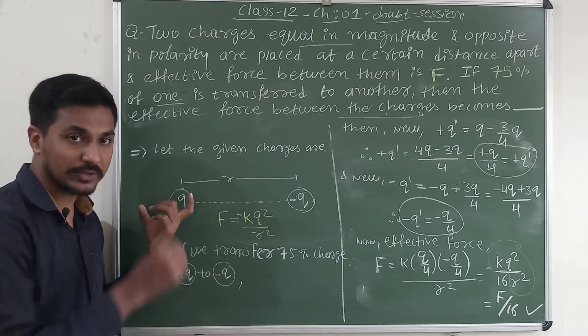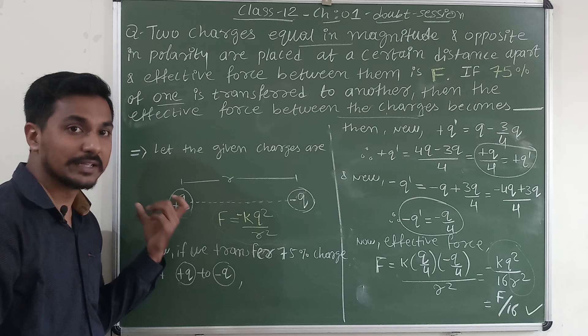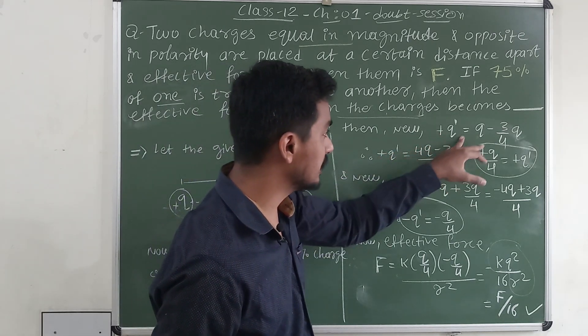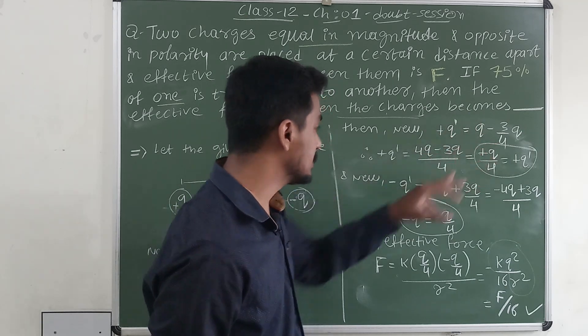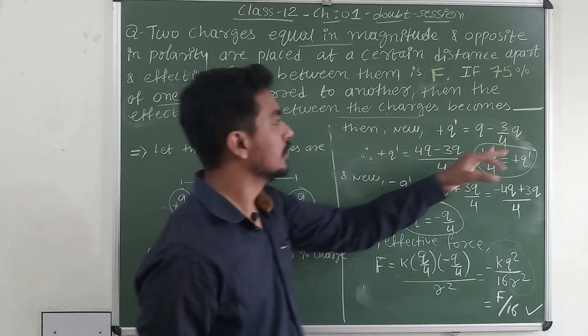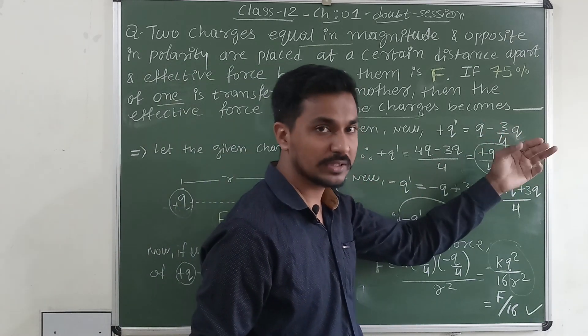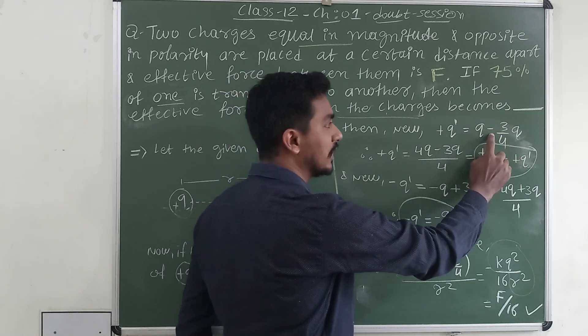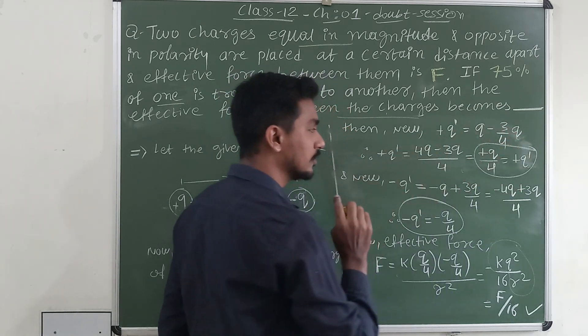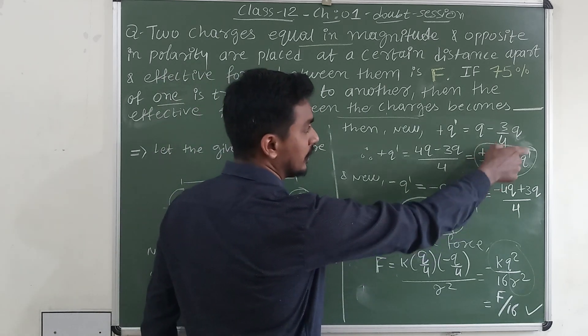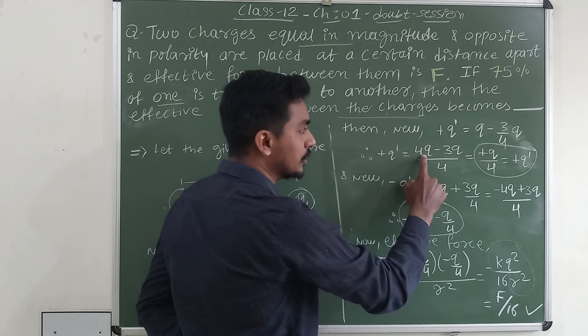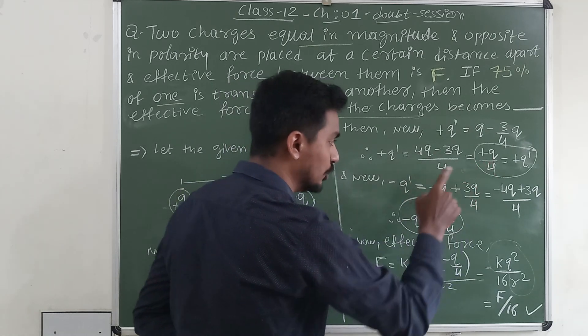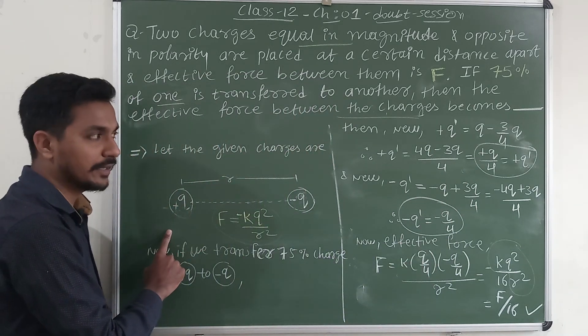From a positive charge if we transfer some amount of charge to another charge, then its amount will reduce. We will get a new charge, here new positive charge plus Q dash. Original is Q. From that we are transferring how much? 75 percent. 75 percent means 3 by 4 of the original charge. Q minus 3 by 4 of Q. If we simplify it we will get 4Q minus 3Q by 4, which is plus Q by 4. Our new positive charge will be plus Q by 4.